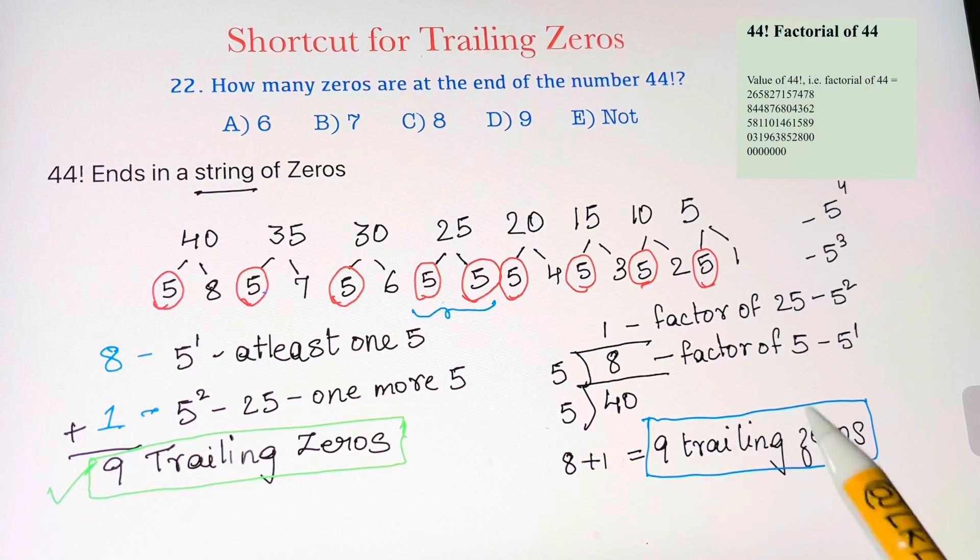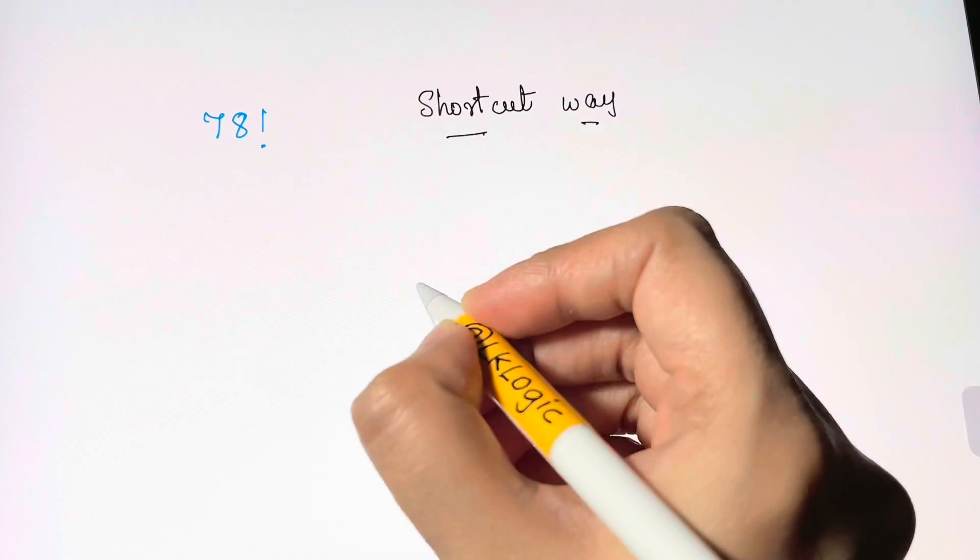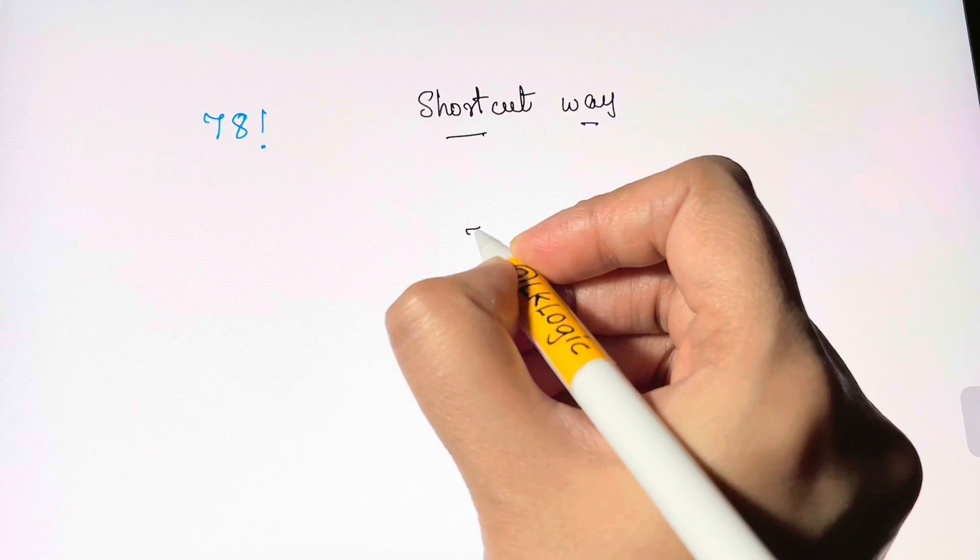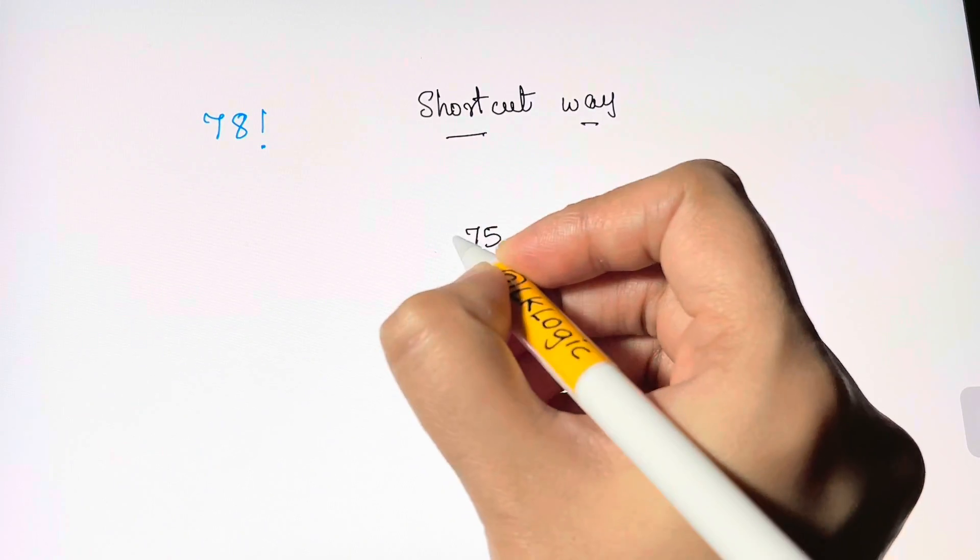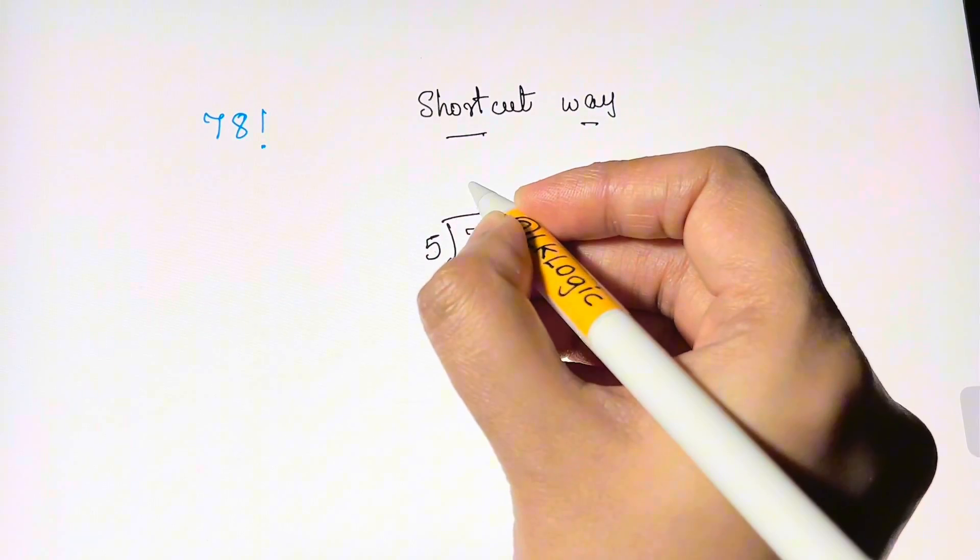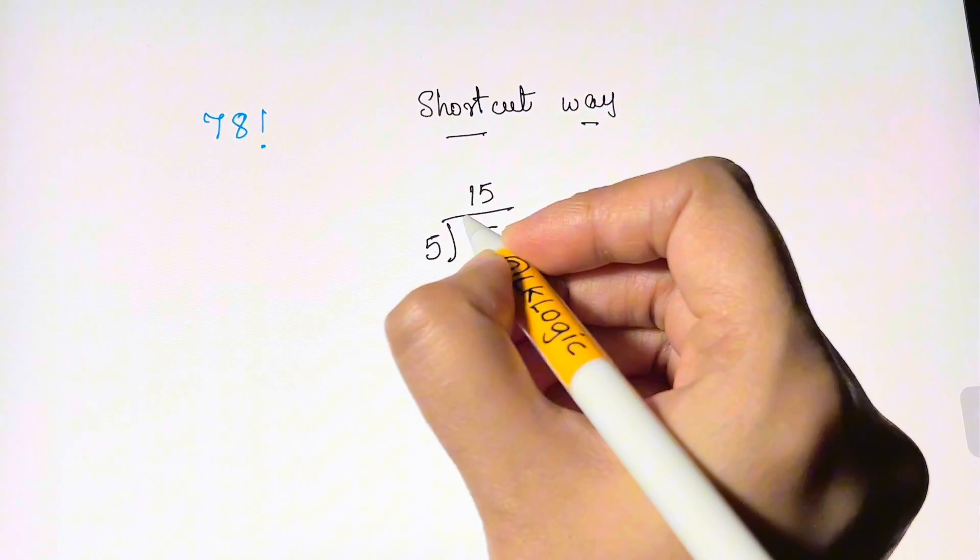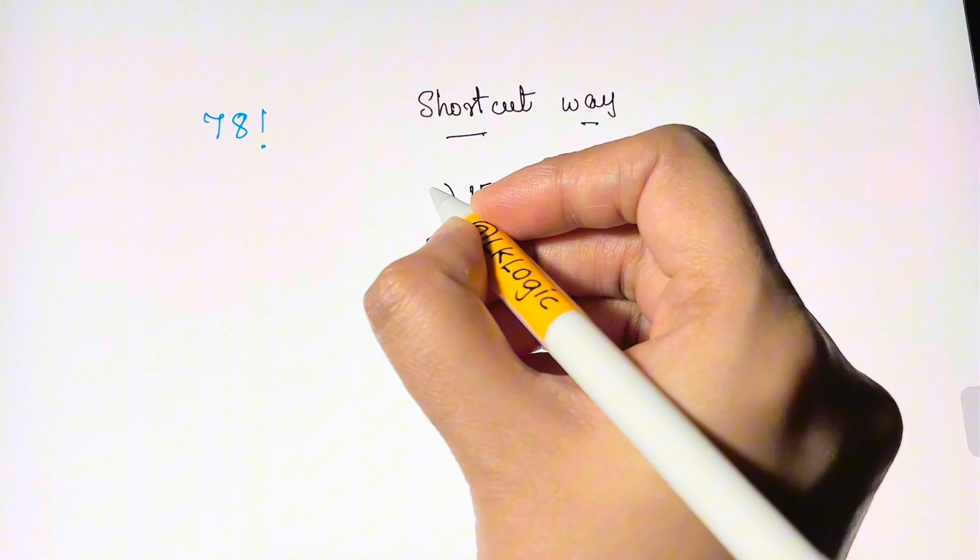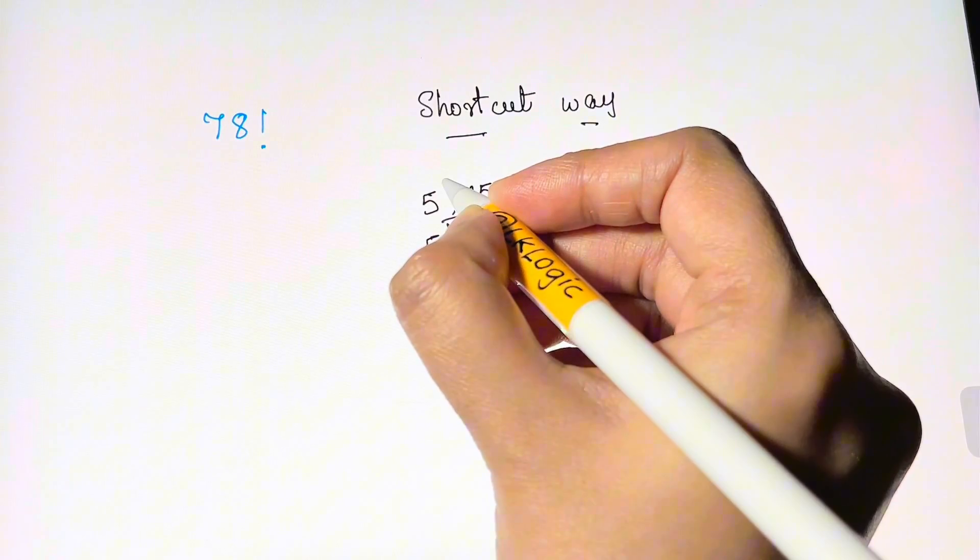Let's take another example. How many zeros are at the end of the number 78 factorial? 75 is the first factorial which we start, so we're going to take 75 and then keep on dividing by 5. It goes in there 15 times, and then again dividing by 5, it goes in there 3 times.